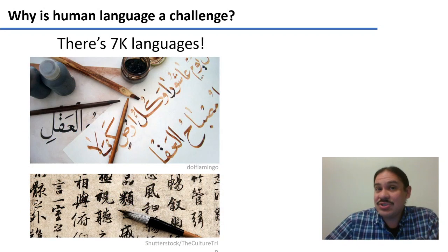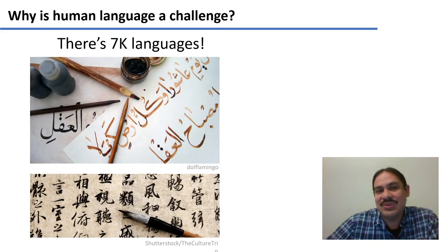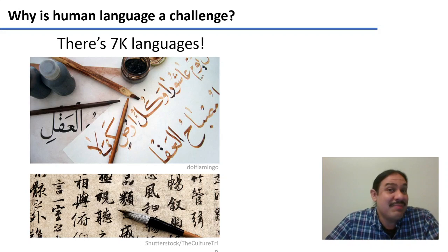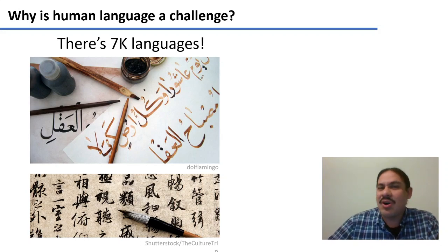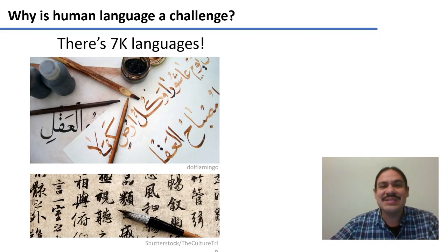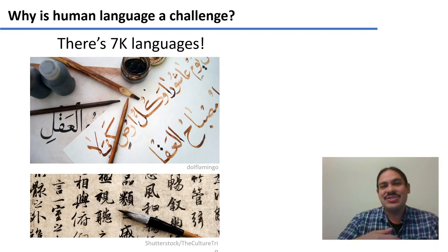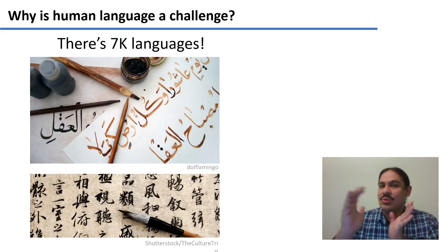The first question is why human language is such a challenge for computers. There are many answers, but the first one is very obvious: there are many human languages. There are about 7,000 of them and they all have many differences. Some of them are very obvious, like having different words or different writing systems. Arabic, for example, is written from right to left, and Chinese and Japanese are written without spaces between the words.